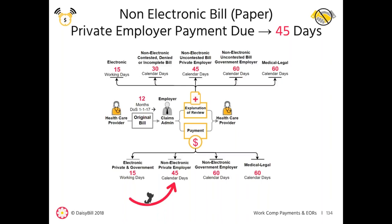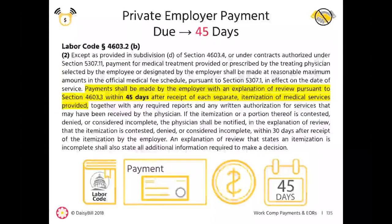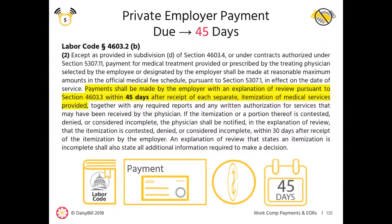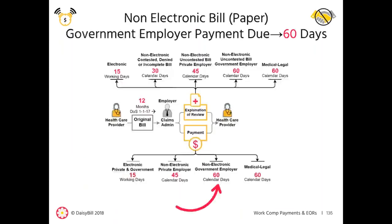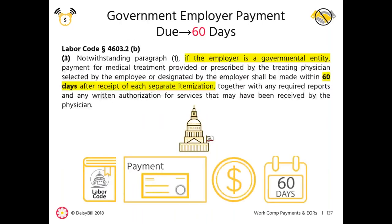For bills submitted non-electronically on paper, the payment due date is dependent on the type of employer. For private employers, payment is due within 45 days of receipt of the paper bill — per Labor Code 4603.4, this is the law; it's not optional and not a suggestion. For state government employers submitting bills non-electronically, payment is due within 60 days of receipt of the paper bill — per Labor Code 4603, this is the law for government employers.